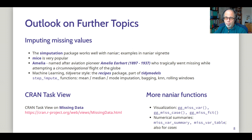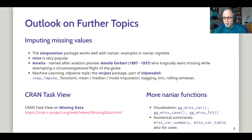I'd also like to encourage you to check out more NANIAR functions that I couldn't cover in this video. There are several functions that start with gg_miss — for example, gg_miss_var, gg_miss_case, gg_miss_fct. And there are also functions to get numerical summaries like miss_var_summary or miss_var_table, with the same applying for cases rather than variables.